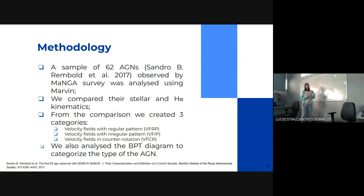We compared the stellar and H-alpha kinematics of each AGN, and from this comparison we created three categories: velocity field with regular pattern, velocity field with irregular pattern, and velocity field with counter-rotation. We also analyzed the BPT diagram of each galaxy to classify the type of AGN.